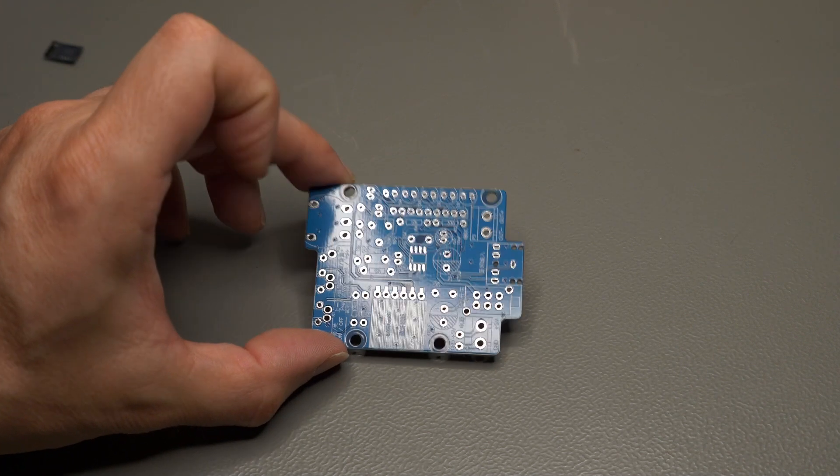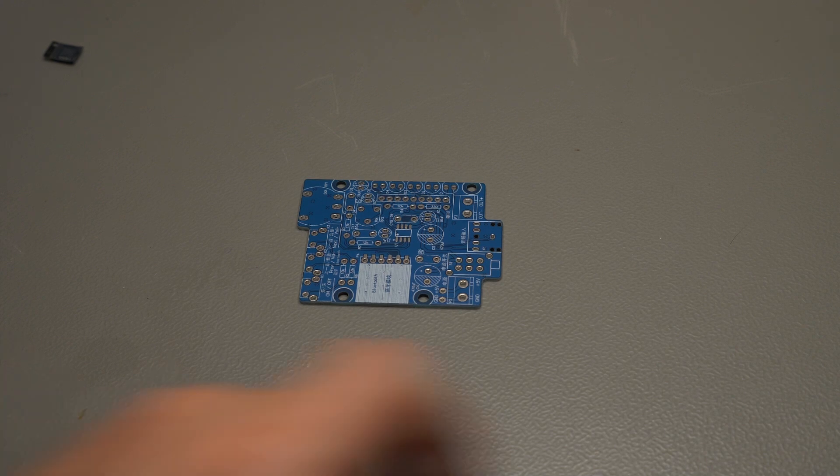Okay, so what else did we get in the box? Well, of course, we need to get all the parts that have to be populated on the PCB. So this is, of course, resistors.